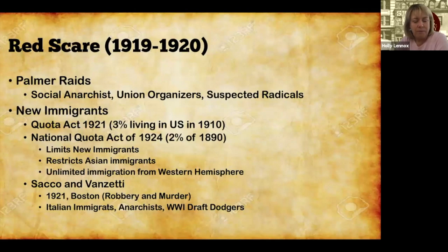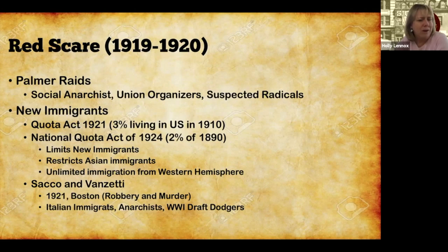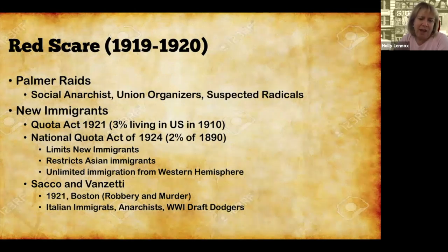One of the fallout cases of the Red Scare was Sacco and Vanzetti — two Italian immigrants, admitted anarchists, and World War One draft dodgers. They were charged and convicted of robbery and murder and executed for those crimes. The problem was that the evidence against them was very weak, and they were largely used as an example of the fears driving the Red Scare during this time period.